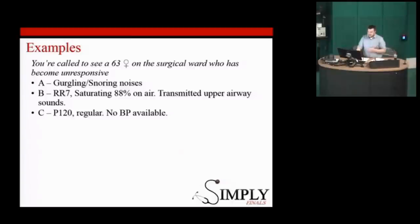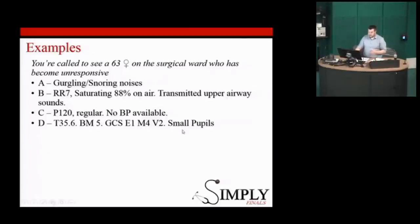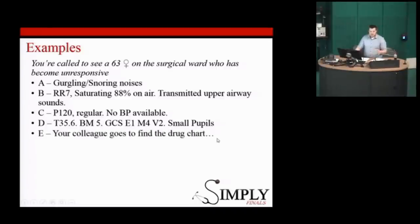She's tachycardic, blood pressure difficult to obtain. Her GCS is borderline — anything less than 8, we can say someone is effectively in a coma and is not safe to maintain their own airway. She has small pupils — consistent with our differential of opioid toxicity. Goes off to find the drug chart. What is the definitive treatment? Naloxone.